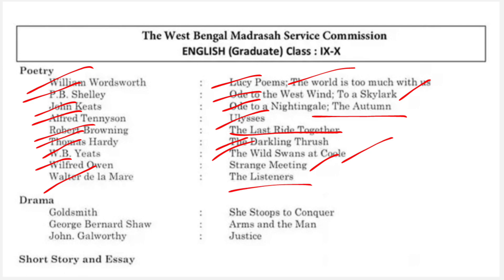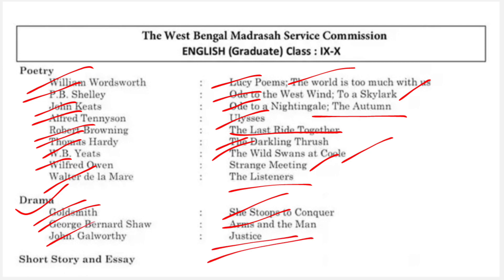In the drama section, we have Oliver Goldsmith's 'She Stoops to Conquer,' George Bernard Shaw's 'Arms and the Man,' and John Galsworthy's 'Justice.' I have already started chapter-wise analysis as well as MCQ videos for these texts.